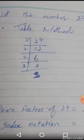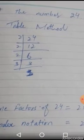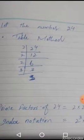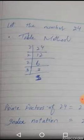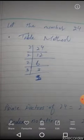Let us consider the number 24. We can solve this number using the table method. The first prime number which divides 24 is 2. When 24 is divided by 2, the answer is 12. Now, 12 is divisible by 2, the answer is 6. When we divide 6 by the smallest prime number, which is 2, the answer is 3.